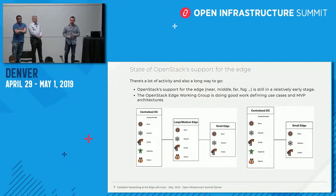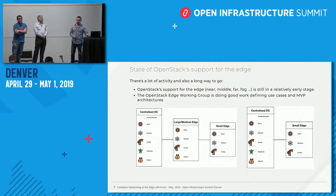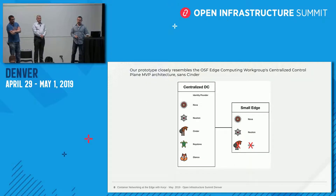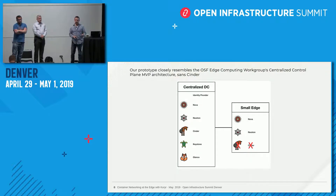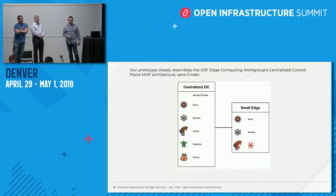The model we have is closer to the one on the right — a central data center and a small edge — which basically looks like that without Cinder. Right now we just have compute, Nova, and ephemeral storage for compute instances.